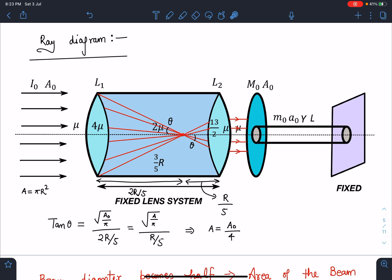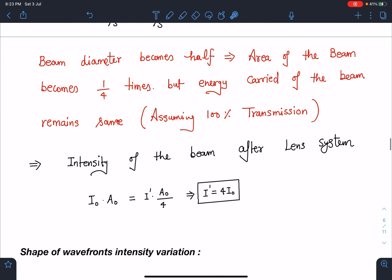But there is one catch here. If you are ignoring this, you may make mistake at this step. If you see this tan θ part, directly I can say this radius divided by this distance and this radius divided by this distance. So I can find out that finally the beam radius becomes one-fourth or the beam area becomes one-fourth and beam radius becomes half. Because directly here this is 2R/5 and this is R/5. So if this is r, this will become r/2. And if this is A, it becomes A/4.